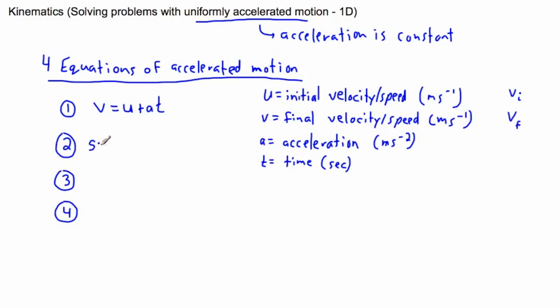We've also got that S equals U plus V over two times T. So we better define S. S is your distance or your displacement, and that's measured in meters. It all depends if it's a vector or not. And most people however call this D.